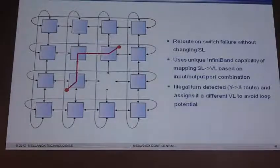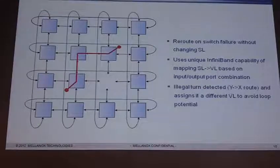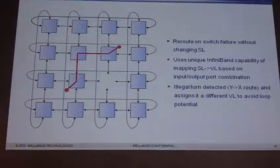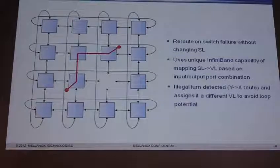It'll put it back to normal and the SL can stay the same. The key is the SL never changes. Once the link comes back online, the subnet manager recognizes it has a torus again and puts it back. It wants to put it back because it doesn't want to leave it in that state in case another failure occurs.